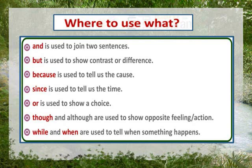Next is 'because'. Because is used to tell us the cause of something. Because ka use hum tab karte hain jab hume reason batana hota hai. Like: I got drenched while returning home because it was raining heavily.